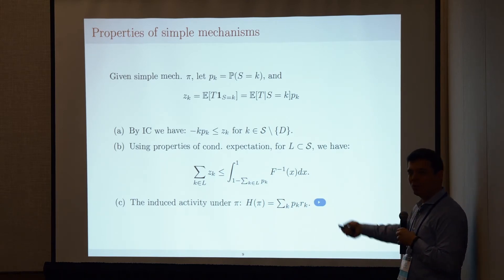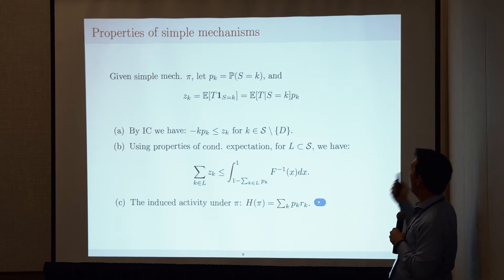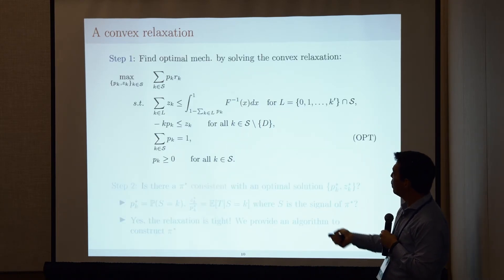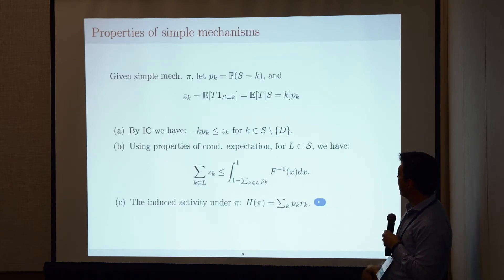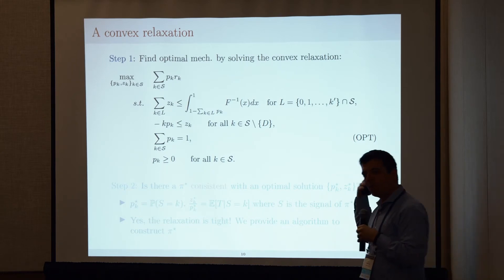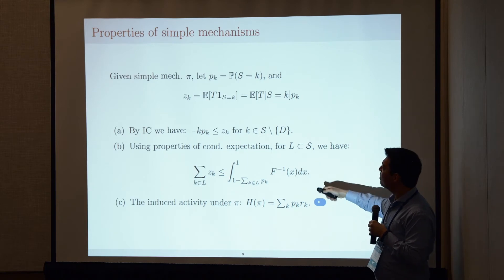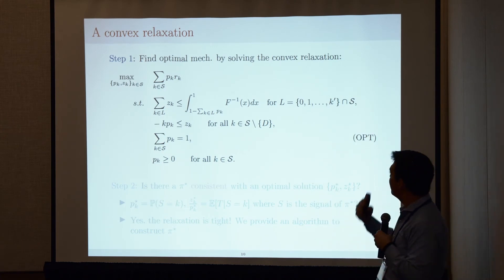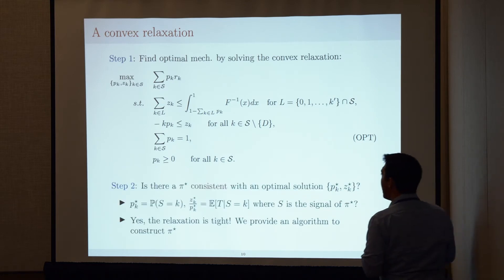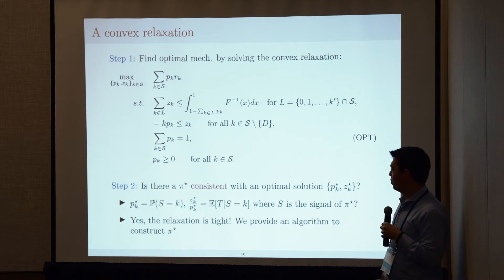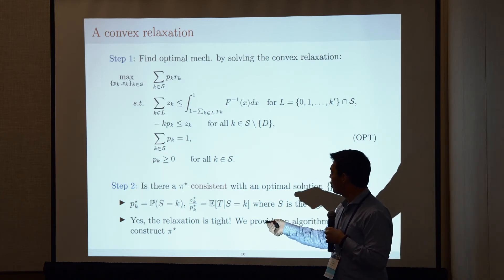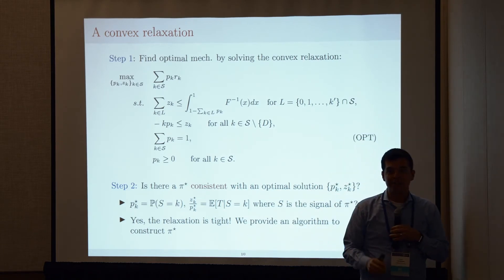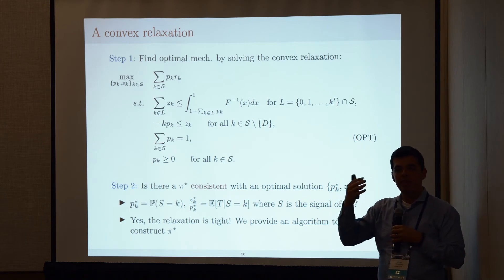The key idea: instead of optimizing over partitions, I optimize over the p_k's and z_k's associated with simple mechanisms, imposing the constraints that any simple mechanism satisfies, and maximize the total expected activity objective. Any simple mechanism induces a feasible solution to this problem, but not vice versa — there are feasible solutions not consistent with any simple mechanism. I then reverse-engineer a mechanism consistent with the optimal solution: a mechanism that sends signal k with probability p*_k and achieves conditional expectation z*_k / p*_k.